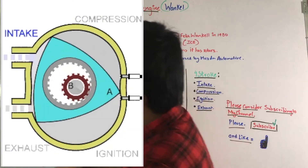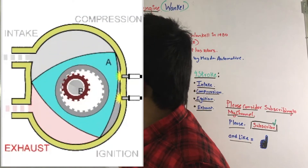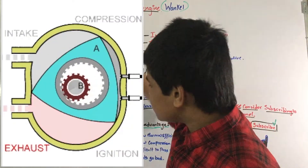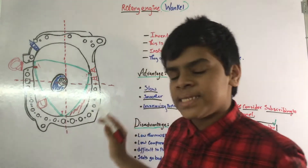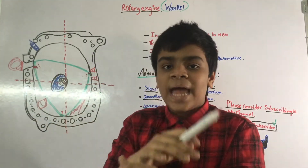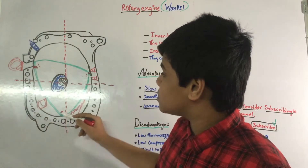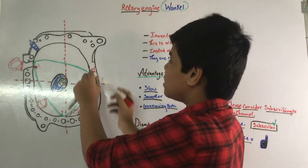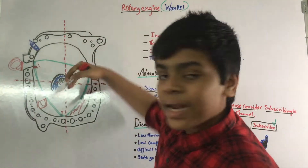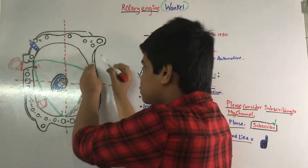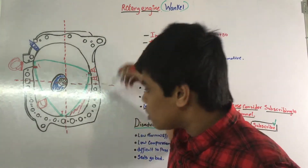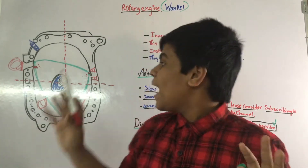After ignition, the rotor tip closes off that area and pushes the exhaust gases out through the exhaust port. You can see in the video the rotor pushing the gases out. The combustion process is complete: intake pulls air in, compression reduces the volume, combustion fires the mixture, and exhaust expels the gases — all done by the rotor's single rotational movement.